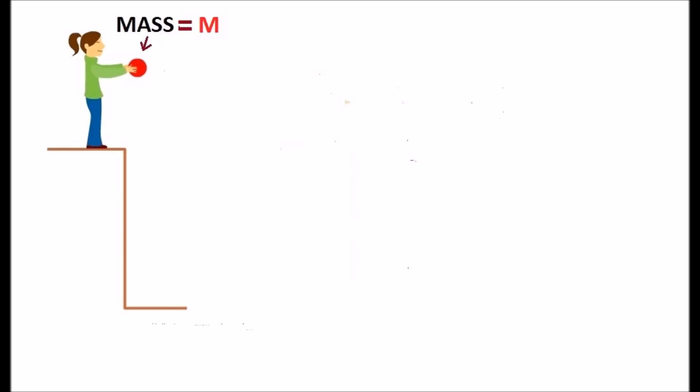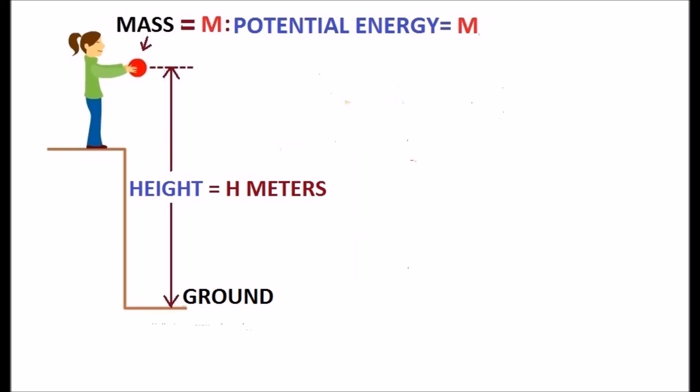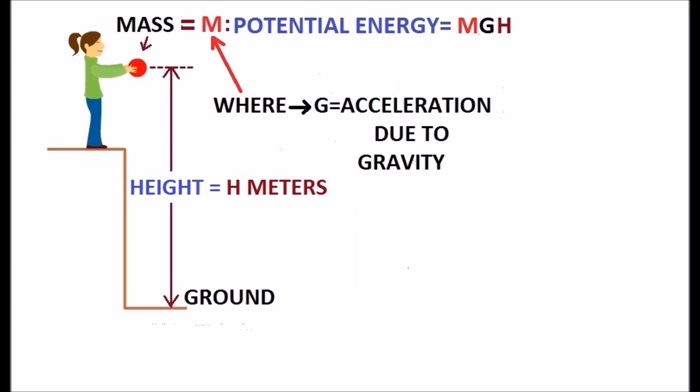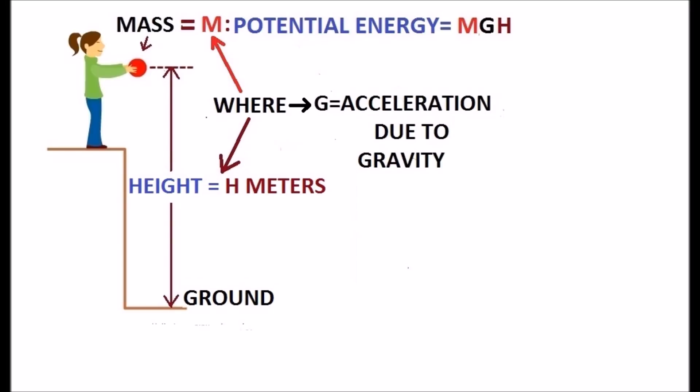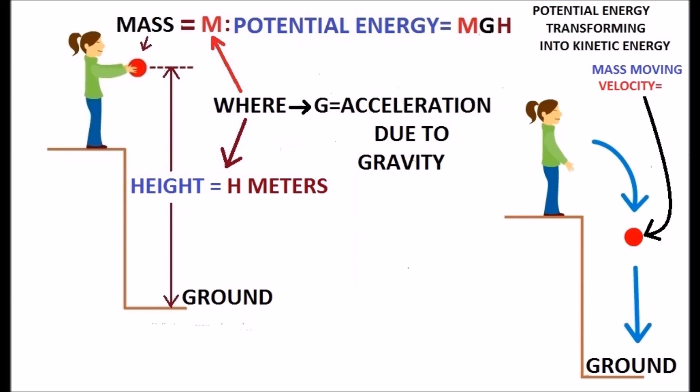When a mass is placed at a height h meters from ground level, it has potential energy equal to mgh, where m is mass, g is acceleration due to gravity, and h is height. Similarly, when a mass is moving with velocity v, it has kinetic energy equal to ½mv², where v is the velocity of the moving mass.